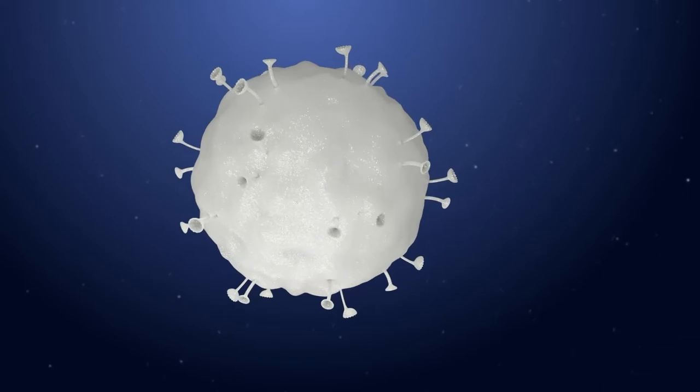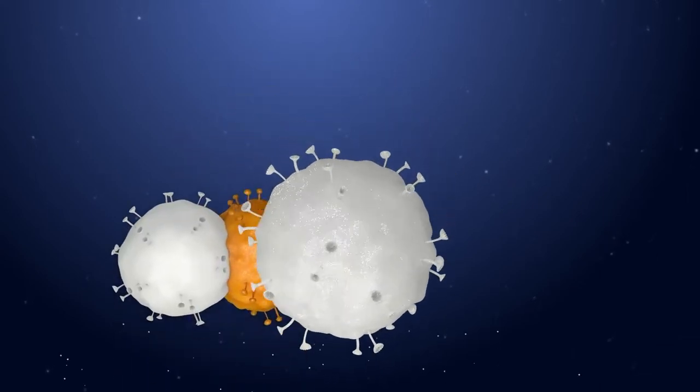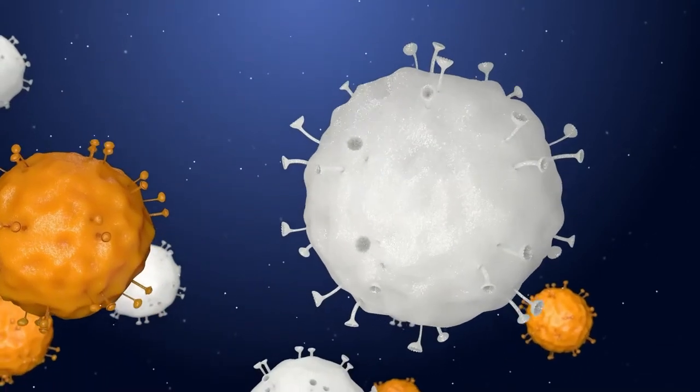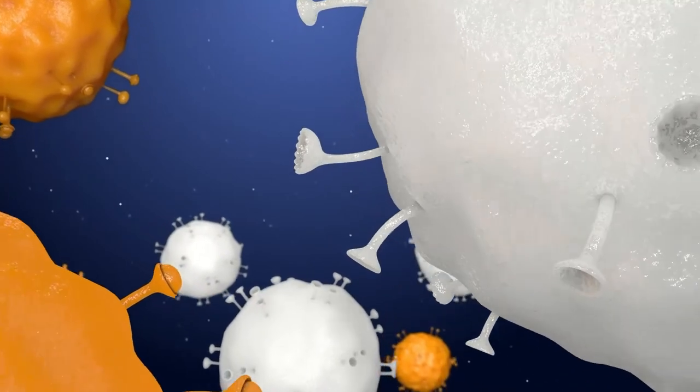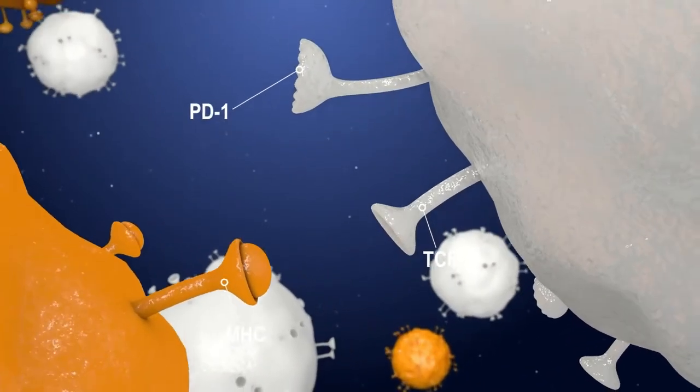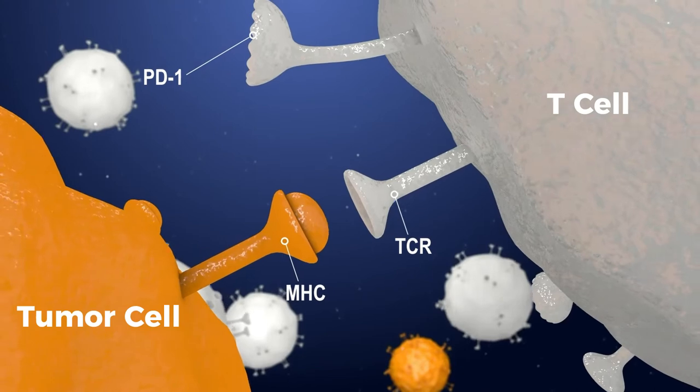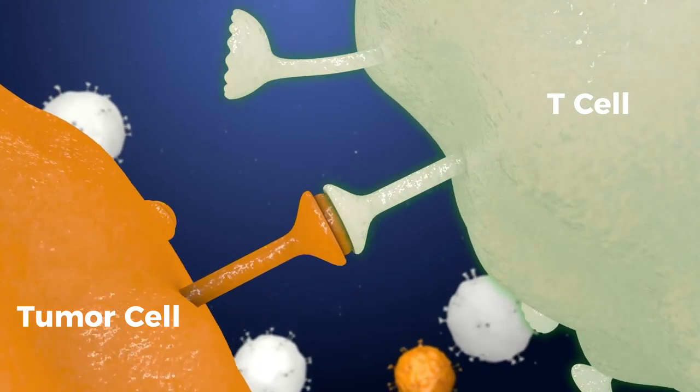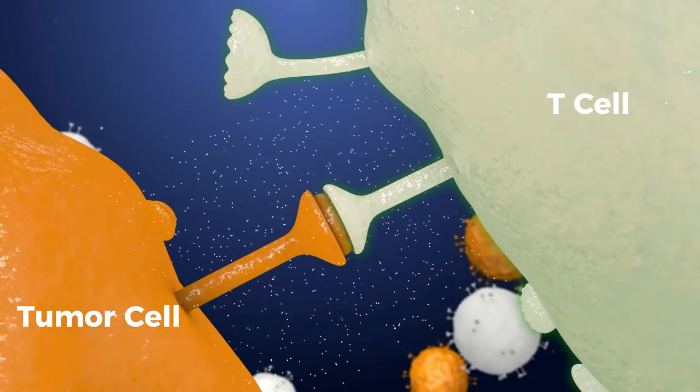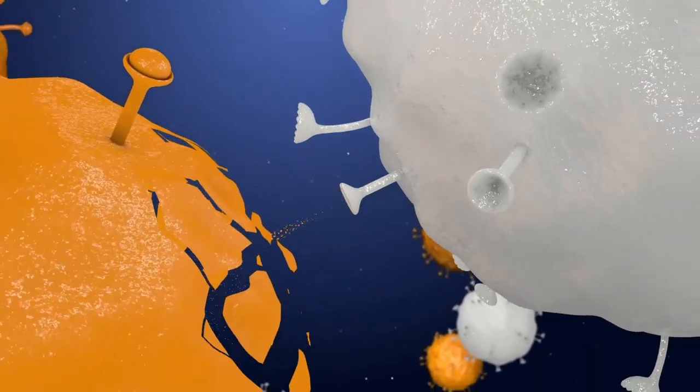T-cells can infiltrate the tumor microenvironment, where activated tumor antigen-specific T-cells recognize tumor cells through the interaction between T-cell receptor and major histocompatibility complex. After the recognition, T-cells will release cytokines to eliminate the tumor cell.